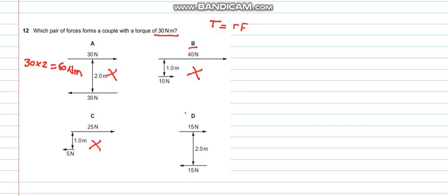Part C the forces are opposite direction but they are not equal so this does not become coupled. Part D the forces are equal and in opposite direction. So the couple is 15 into 2, 30 Nm. So the answer is D.